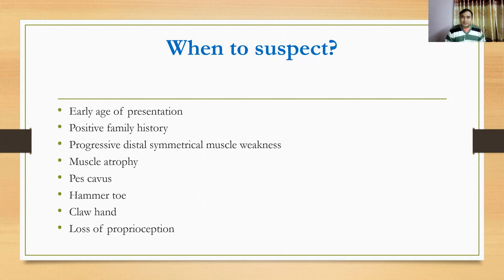The typical clinical picture of hereditary neuropathy is progressive distal symmetrical muscle weakness. The patient has distal muscle weakness, which is usually symmetrical, and the patient may present with foot drop or frequent ankle sprains because of the weakness. It is a very slowly progressive condition.